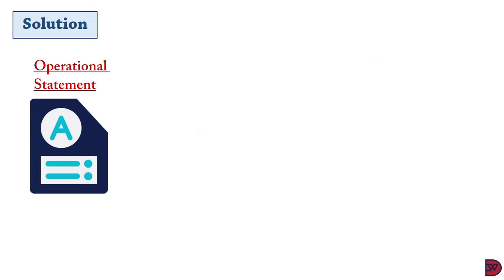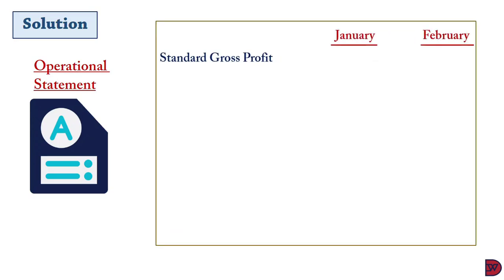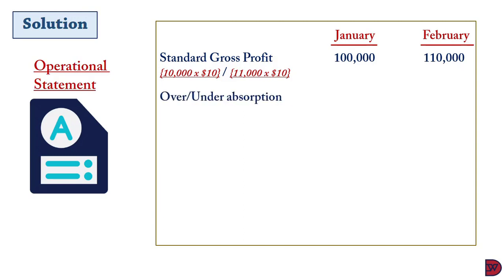Moving to the operational statement, we start with the standardized gross profit of ten dollars multiplied by actual sales units — ten thousand for January gives one hundred thousand dollars, and eleven thousand for February gives one hundred and ten thousand dollars. We then adjust for variances by checking whether there is over or under absorption of overheads.